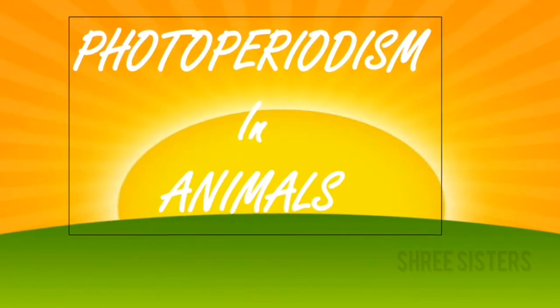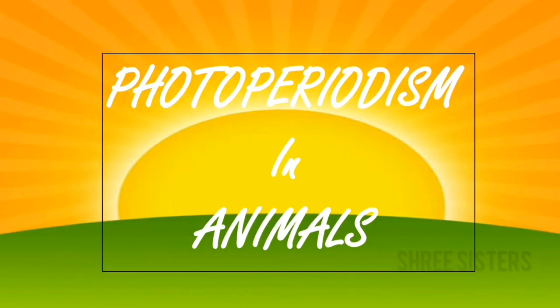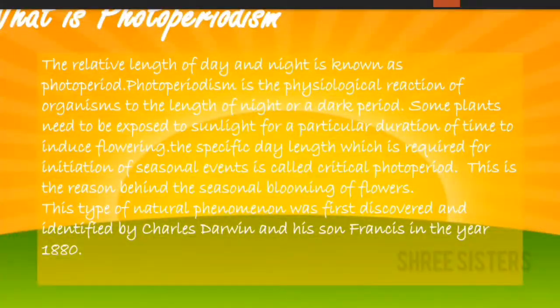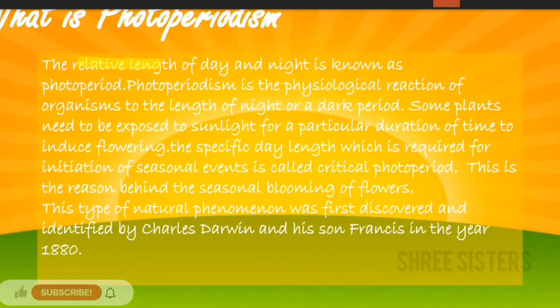Welcome to Free Sisters. In this video, we are going to see about photoperiodism in animals — what photoperiodism is and how it affects animals. First, let's see what a photoperiod is: the length of the day and night is known as the photoperiod, basically the average length of a day-night cycle.